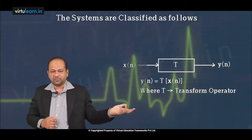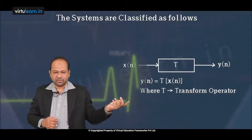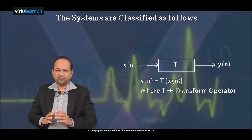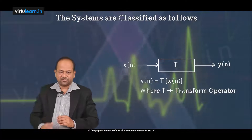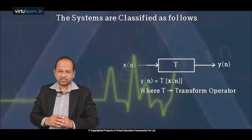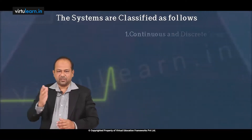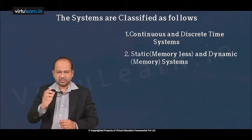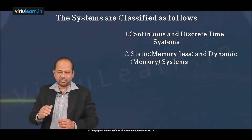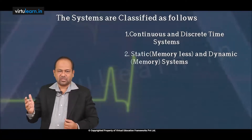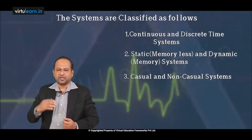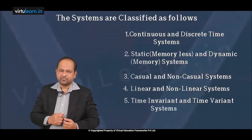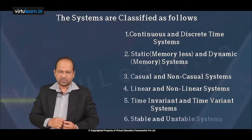A system which gives some desired output for the desired input — that is a system. We write the system as x of n transforms to y of n, or y of n equals transformation of x of n. We have transformed the input into some other form as we wish. Based on this theory, we classify systems into different types: continuous and discrete, static and dynamic, causal and non-causal, linear and non-linear, time-invariant and time-variant, and stable and unstable.